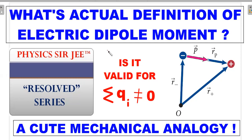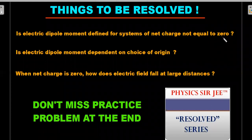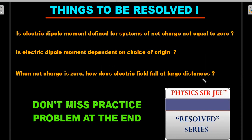The key questions to resolve in this video: Is electric dipole moment defined for a system with net charge not equal to zero? Is electric dipole moment dependent on the choice of origin? Is the calculation of electric dipole moment for a system of charges dependent on origin choice? And when net charge is zero, how does the electric field fall off at large distances — as 1/r², 1/r³, or 1/r⁴?